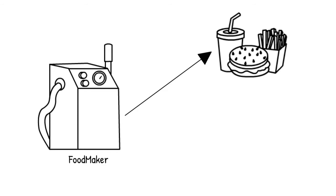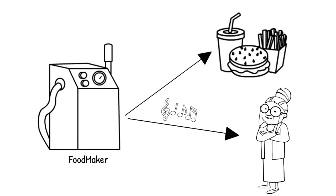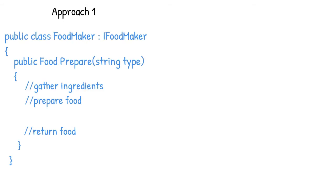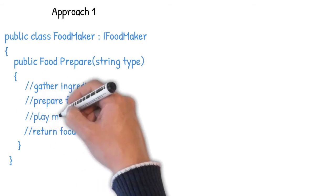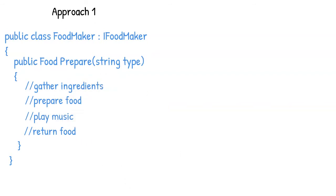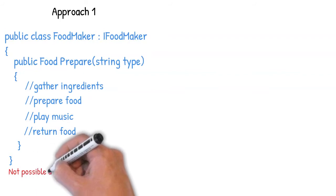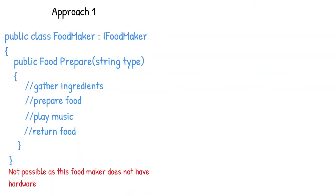But what happens if in future there is a new requirement that whenever food is ready the food maker has to play a sound? Approach one is to modify the existing food maker to accommodate this requirement. Though this looks simpler, there are challenges: the food maker might not have the appropriate hardware to play the music, or we still want to sell the food maker without music to some clients, and modifying it makes that difficult.